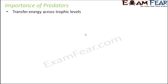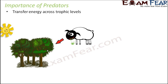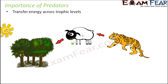The first importance of predation is that it helps to transfer energy across trophic levels. Plants prepare their own food by photosynthesis, so the energy is stored within the plants. When these plants are eaten up by herbivores like goats, the energy gets transferred to the goats. When these goats are eaten by animals like tigers, the energy gets transferred from the goats to the tiger. So because of predation, energy is transferred to different trophic levels — plants represent one trophic level, goats represent another, and the tiger represents yet another.